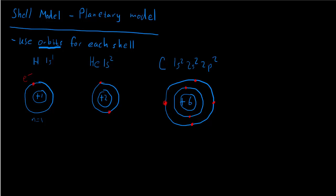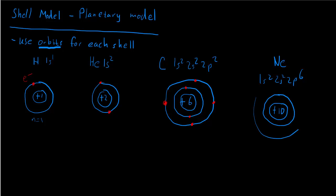Let's do one more for good measure — Neon. Neon's configuration is 1s2, 2s2, 2p6. I need to figure out the nuclear charge for Neon, so I look that up on the periodic table. That's atomic number 10, so plus 10 charge in the nucleus. Here's my first orbit — my first shell, n equal one — and here's my second shell, n equal two. If you were further down on the periodic table, you might have to draw a third or fourth orbit as you keep going down the rows.